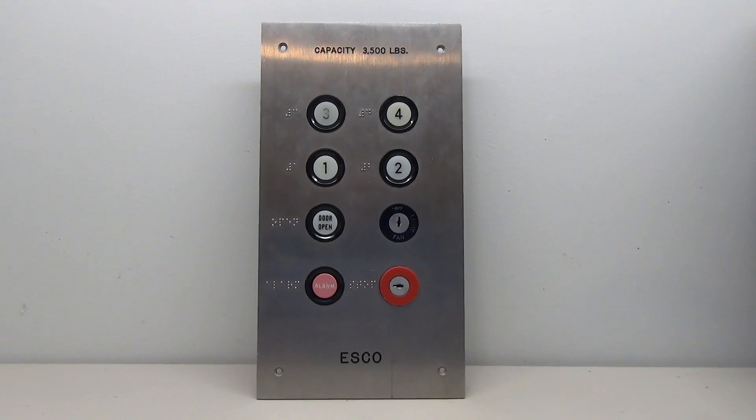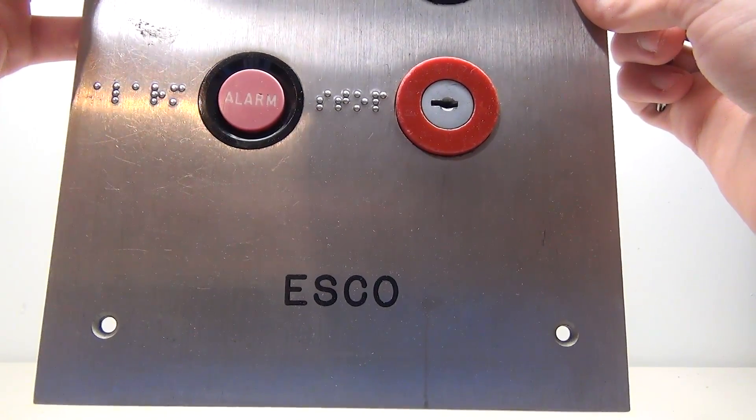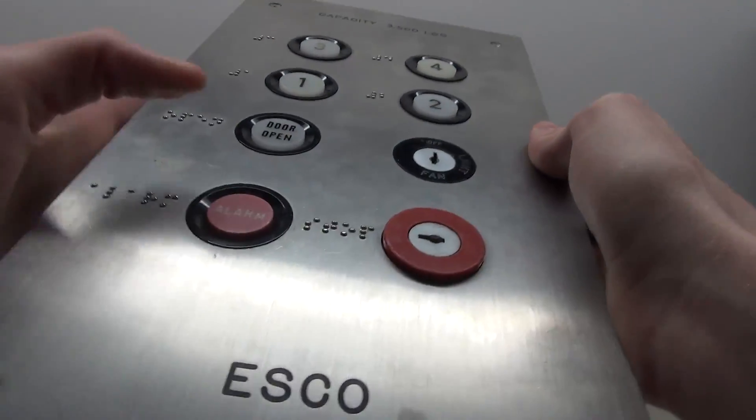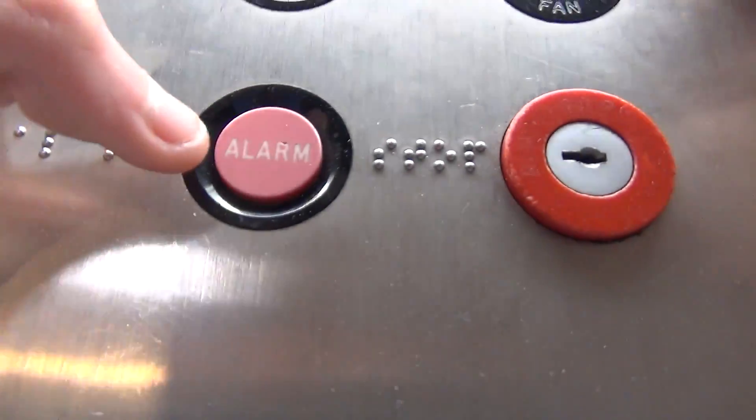Alright guys, so we have a pretty small car panel here to work with today. This is one of the smaller GAL Jet Plus panels I've seen. This came out of an ESCO elevator, and if we just take a look at it, you can see here we've got the alarm button which is pretty much pink at this point.